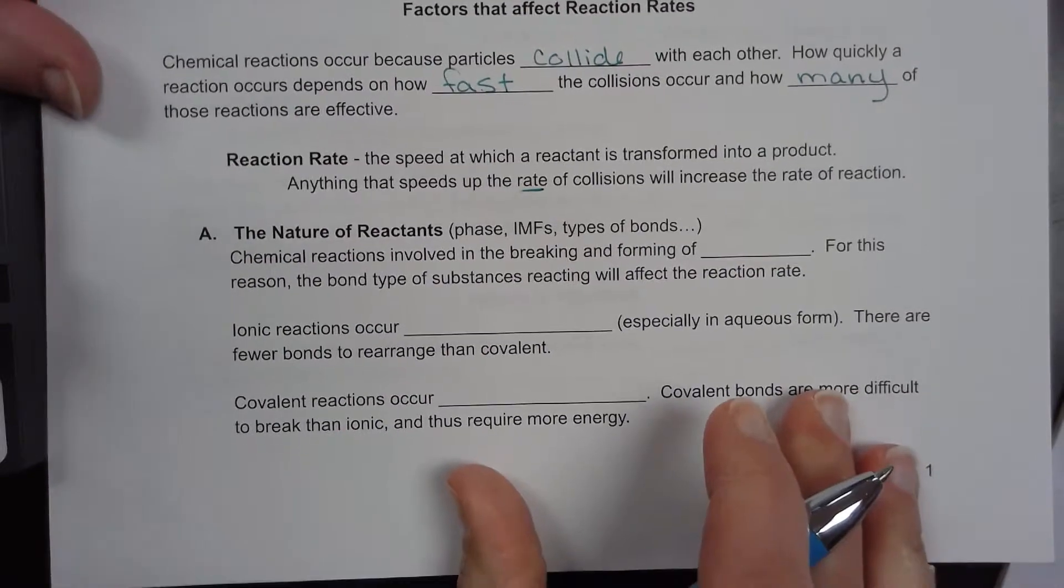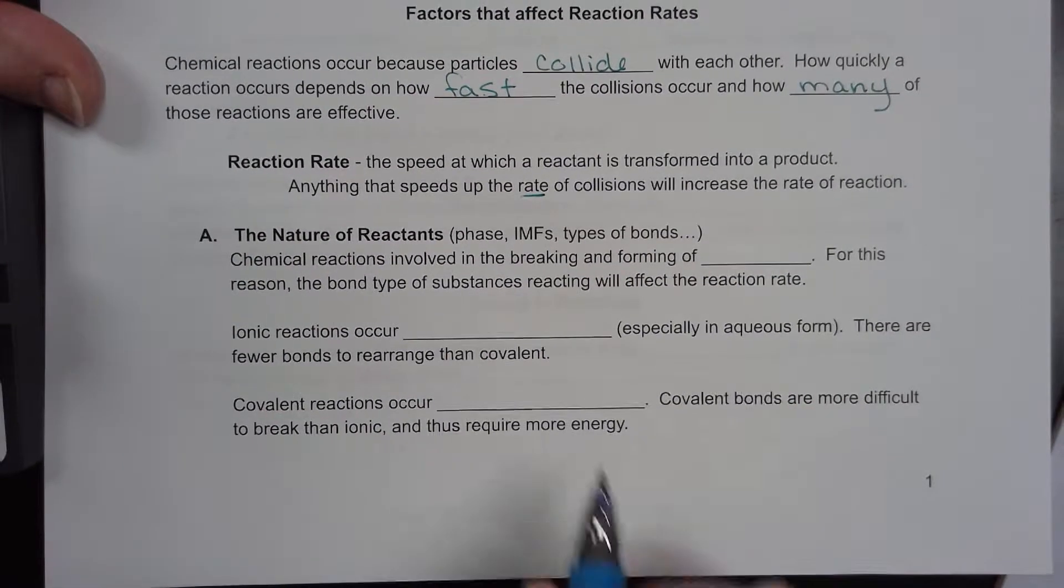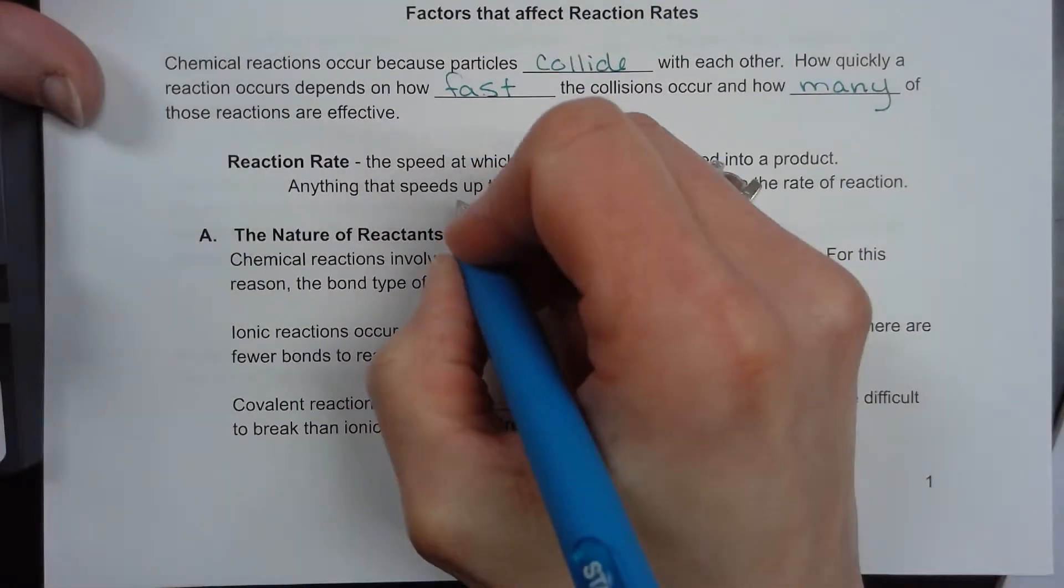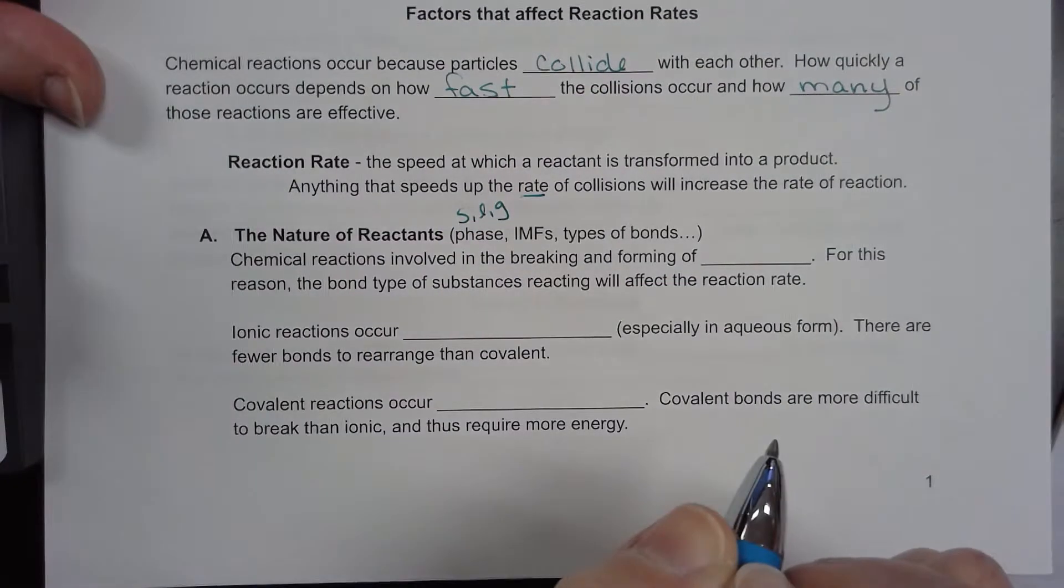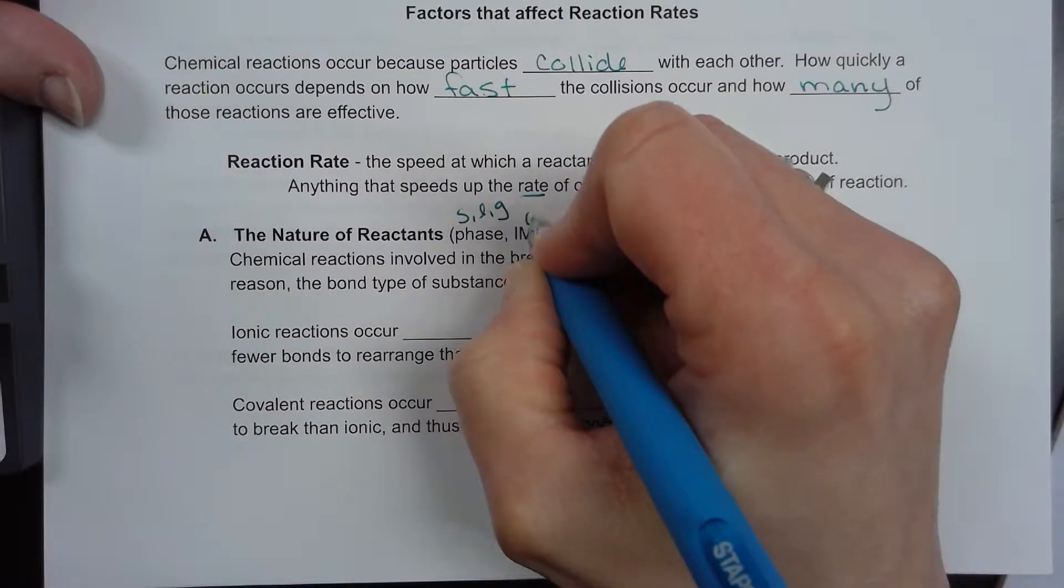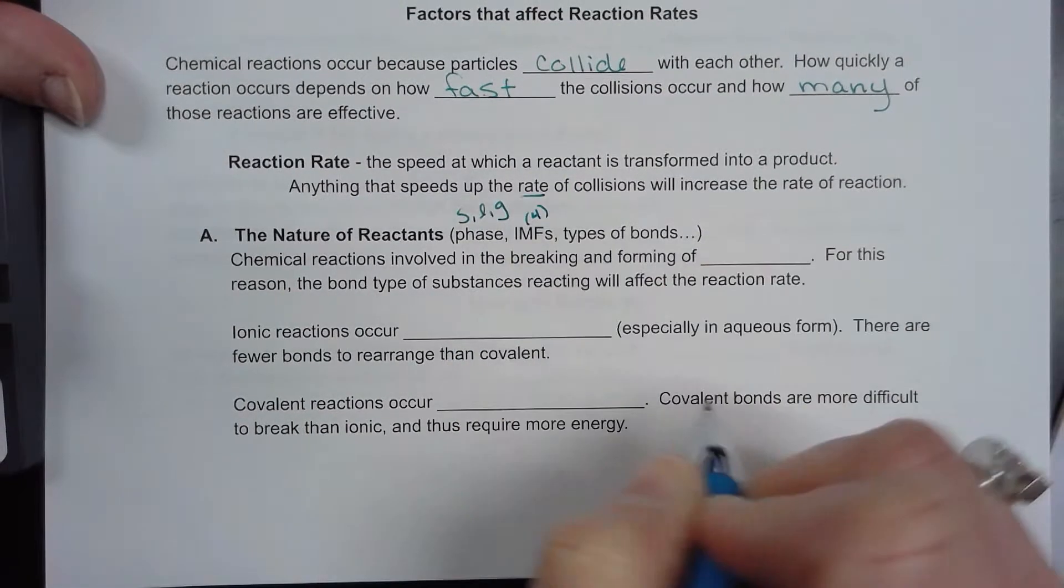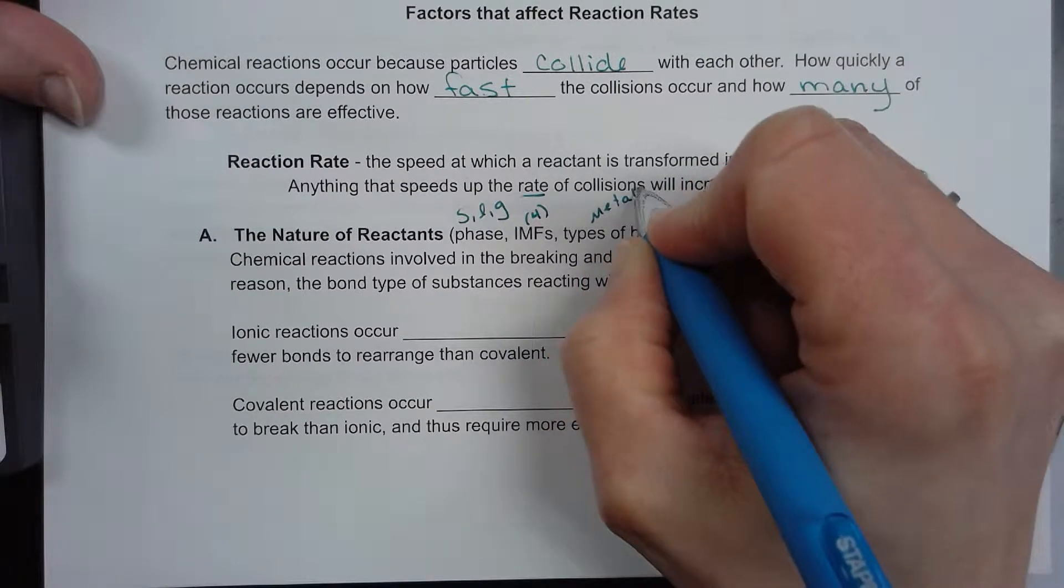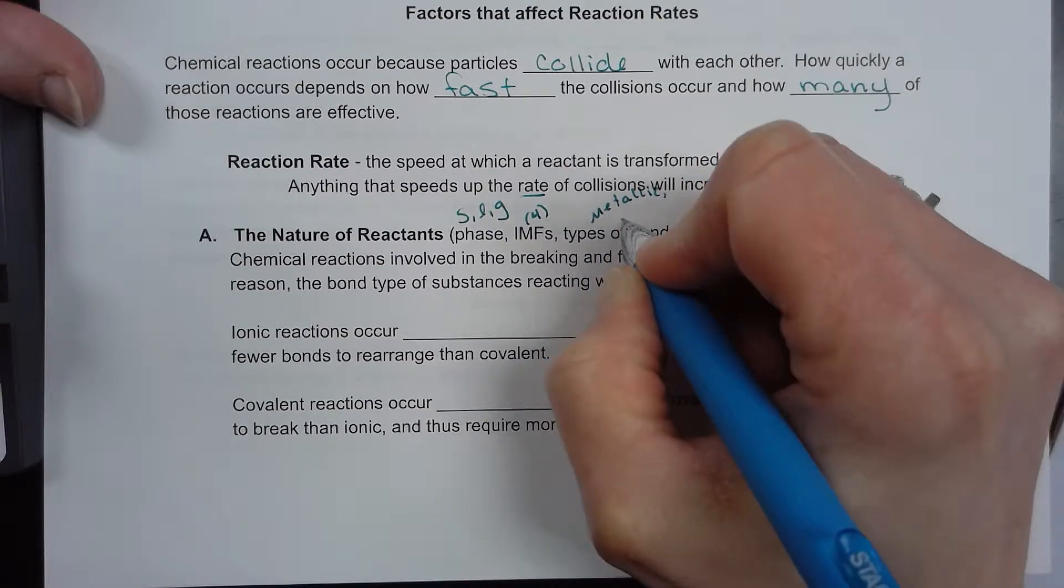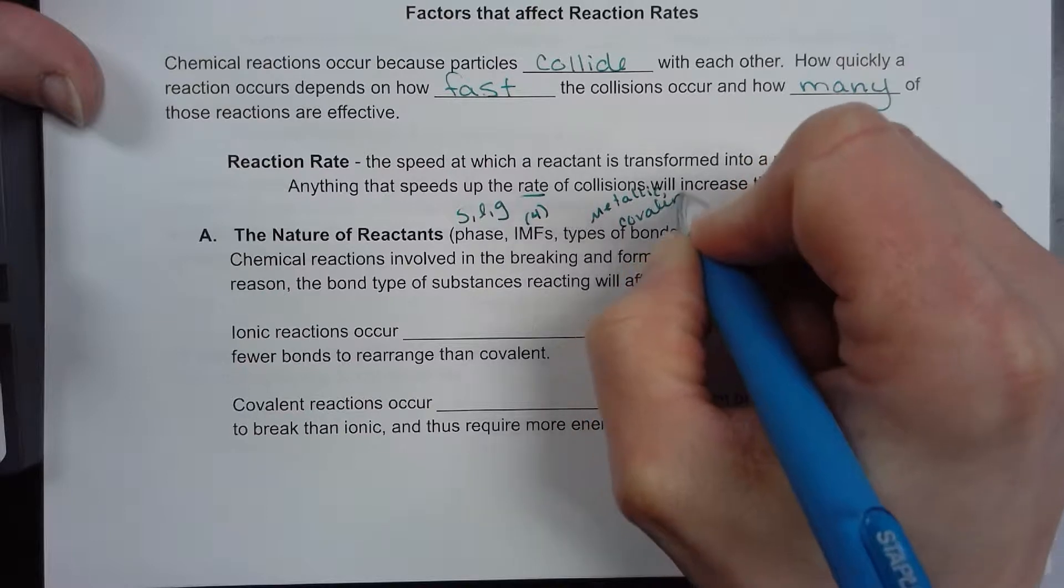The nature of reactants is our first factor. Phase - we're talking solid, liquid, gas. Intermolecular forces - we have four of them, know them. What types of bonding do we have? Metallic, covalent, ionic, and so on.